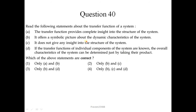Question number 40: read the following statements about the transfer function of a system. The transfer function provides complete insight into the structure of the system — this is not correct. It offers a symbolic picture about the dynamic characteristics of the system — this is correct. It does not give any insight into the structure of the system — this is also correct. If transfer functions of individual components are known, the overall characteristics can be determined by taking their product — this is not correct. So B and C are correct; the second option is correct.